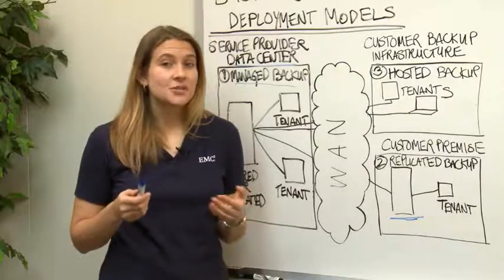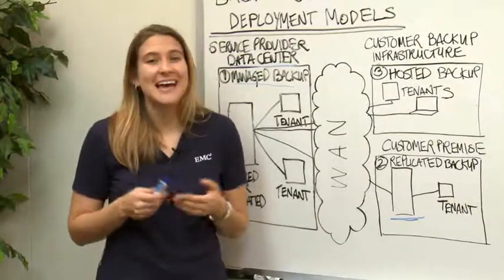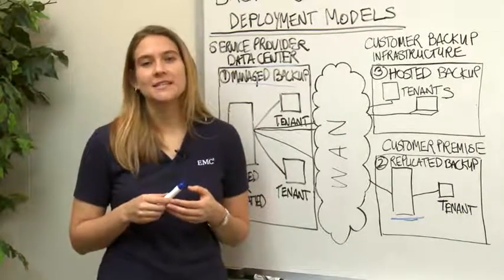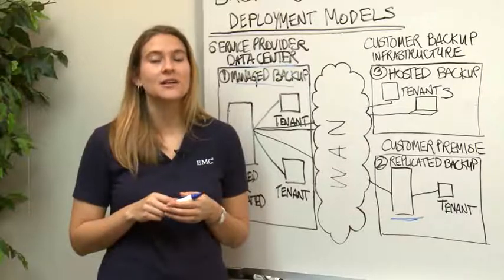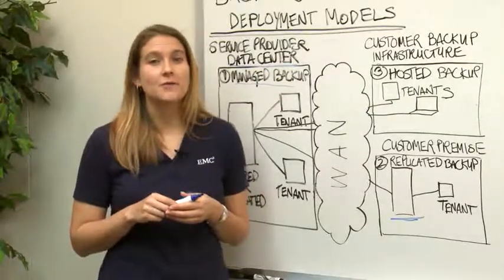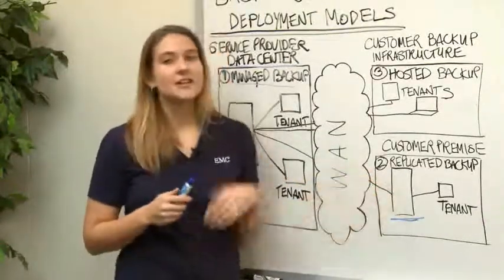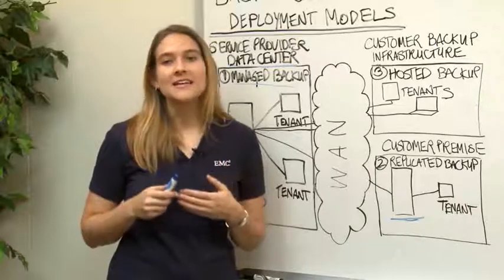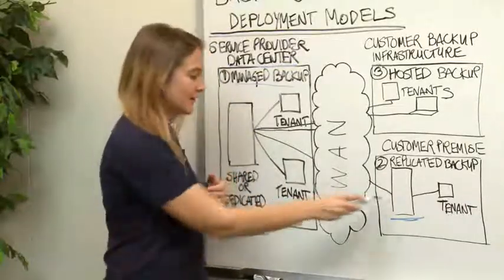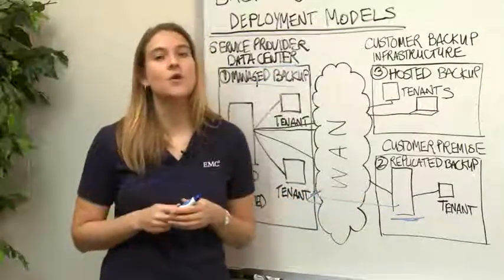However, for the replication purposes, the customer doesn't necessarily want to own or manage additional backup infrastructure, nor does it want to incur the expense of a remote site for disaster recovery purposes. So for such a customer, a service provider offers replicated backup services via the on-premise leveraged EMC Avamar data store or data domain backup appliance, which replicates the customer data to the service provider's data center over the WAN.